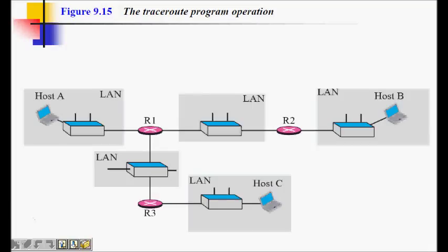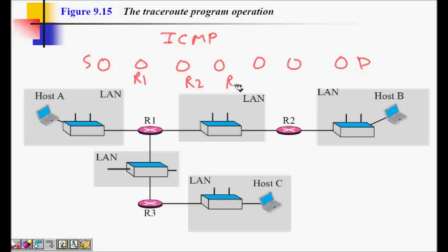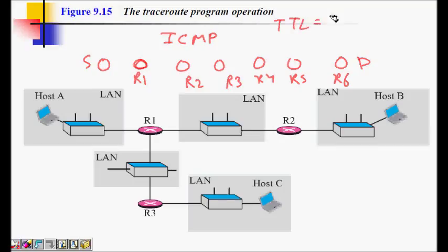Traceroute is also implemented using ICMP. The idea is: given a sender, several routers, and a destination, I send an IP packet very intelligently. I set the initial TTL to 1. When the packet reaches the first router R1, the TTL becomes zero, and R1 generates an ICMP time exceeded error message. Since the source of that message is R1, I now know R1 is the first router in the path to my destination.